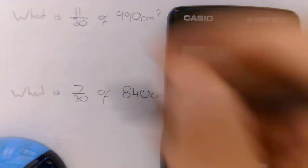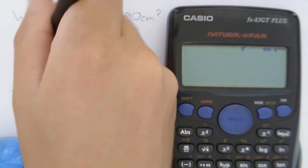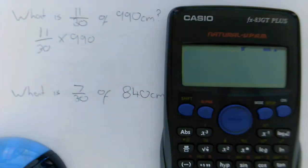Now to do this question we'd need to do 11 thirtieths times by 990. So we need to know how to put this into our calculator.